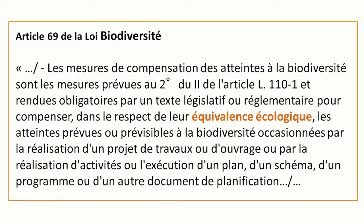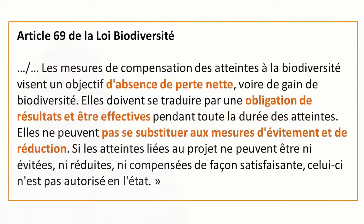Dans le respect de l'équivalence écologique, de façon à ce que les atteintes prévues ou prévisibles à la biodiversité, occasionnées par la réalisation d'un projet, puissent être effectivement compensées par une réelle mise en œuvre. L'absence de perte nette est également introduite dans la loi, ainsi que l'obligation de résultat, qui suppose que les mesures devront être effectives mais aussi contrôlées pendant toute la durée des atteintes à la biodiversité. La loi précise enfin que si les atteintes liées au projet ne peuvent être ni évitées, ni réduites, ni compensées de façon totalement satisfaisante, alors le projet ne doit pas être autorisé.